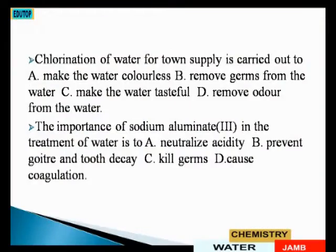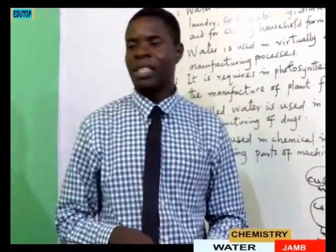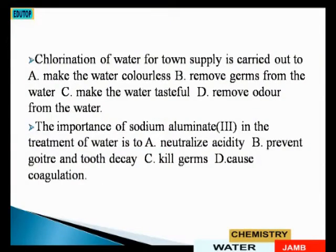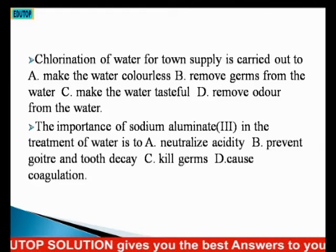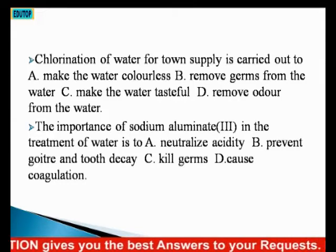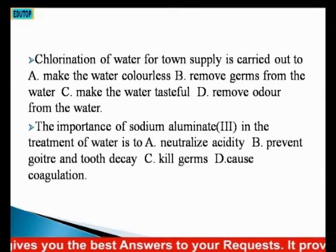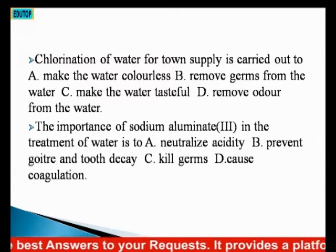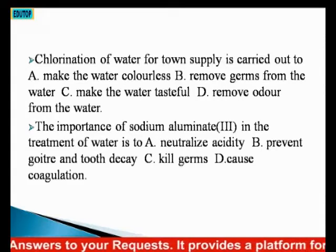The next question: chlorination of water for town supply is carried out to — chlorination is the process whereby chlorine is introduced. The significance of introducing chlorine is to kill germs in the water. Option A: make the water colorless — no. Option B: remove germs from the water — yes, to kill and eradicate germs. Option C: make the water tasteful — no. Option D: remove odor from the water — no. The answer is option B.